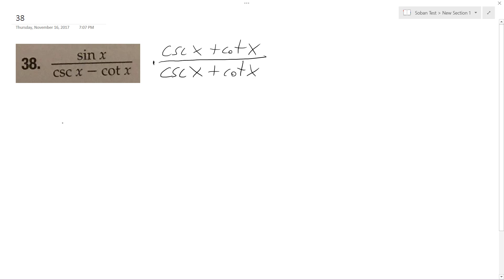All right, so sine x times cosecant x equals one, plus sine x times cotangent x, which is cosine over sine, so it becomes cosine x.